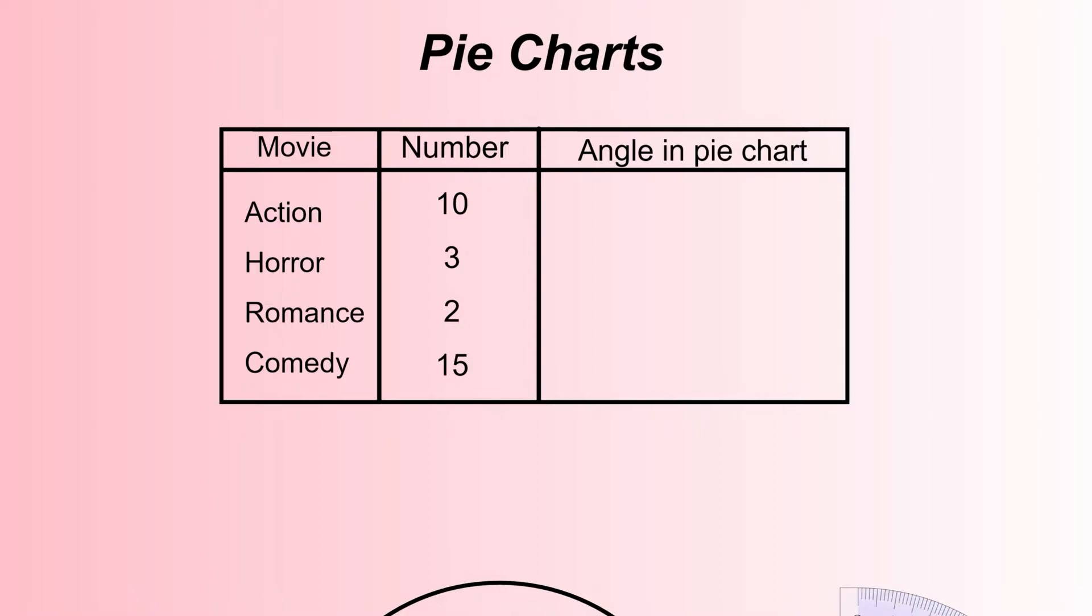First, we need to know how many people took part in this survey. The easy way to do that is just to add all the totals in the middle column, which is sometimes called the frequency column. So 10 add 3 is 13, add 2 is 15, add 15 is 30. The total for this column is 30, so we're talking about 30 people being asked.